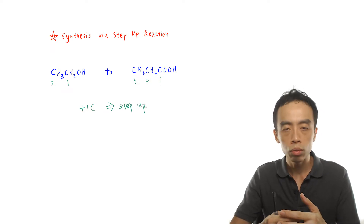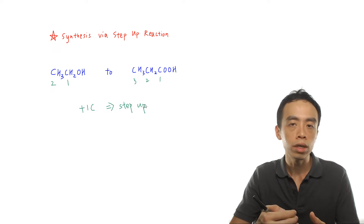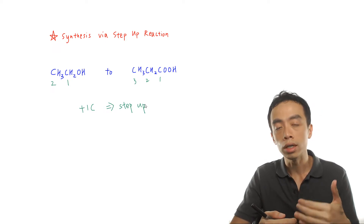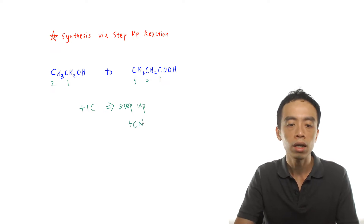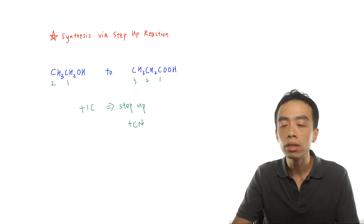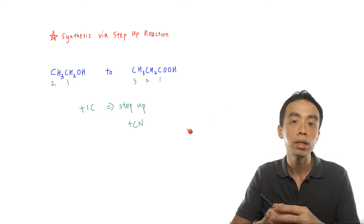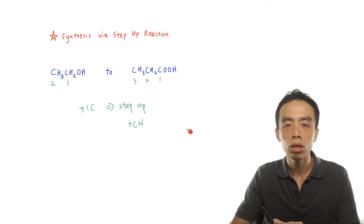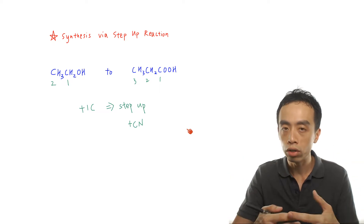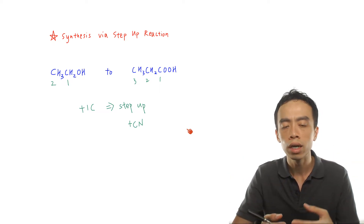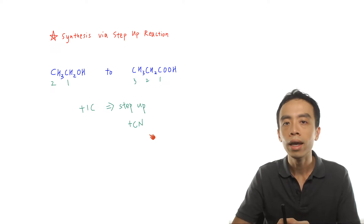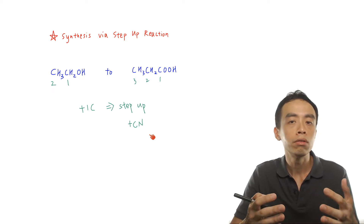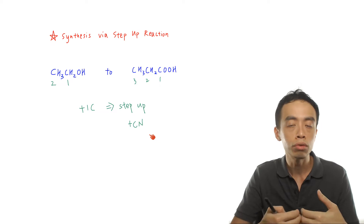And instinctively, what we should be thinking of involving a step-up process or an increase in the number of carbon is to go through nitrile, which is our CN functional group. Because in the syllabus, the only way for us to increase the number of carbon by 1 using reactions, reagents, and conditions within the syllabus is to go through nitrile or CN. And there are actually two different reactions that we can use to introduce nitrile.